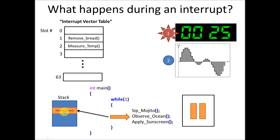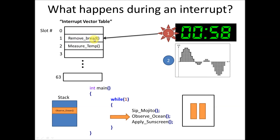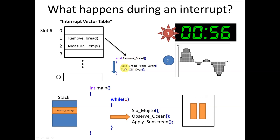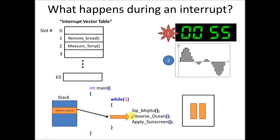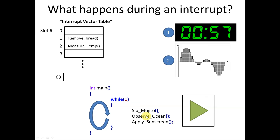Once that storage is complete, the system looks up what interrupt service routine is associated with that interrupt in the interrupt vector table, finds the 'remove bread' function we put there, and starts executing it. Once that finishes executing, it goes back, restores the program context — the program counter and the status register — and execution starts up again like nothing happened. So while that was happening: the timer ticked down, the main program was paused, we set a bookmark, we ran the interrupt service routine, and then resumed execution after restoring the bookmark.